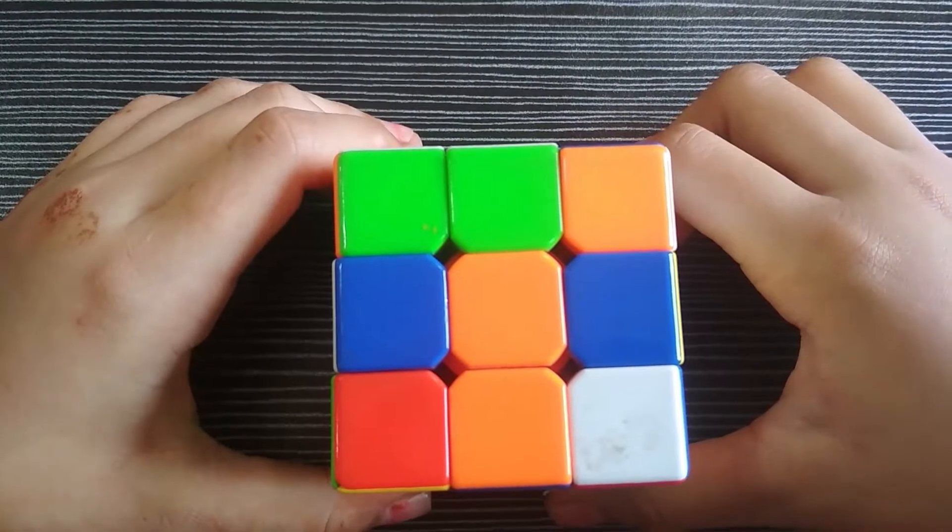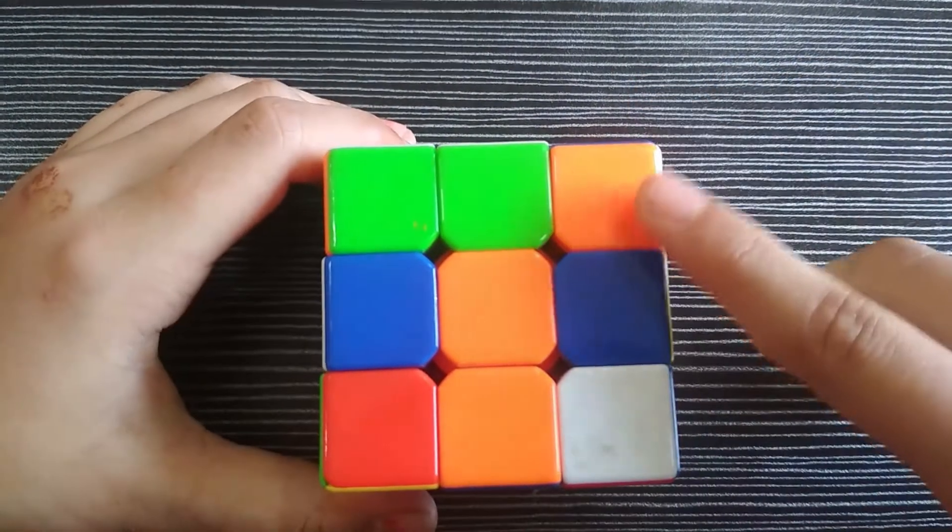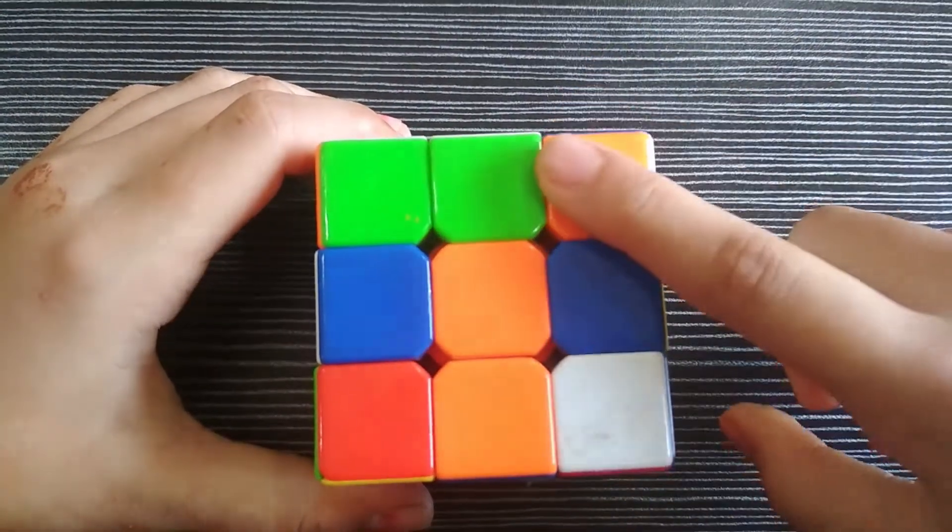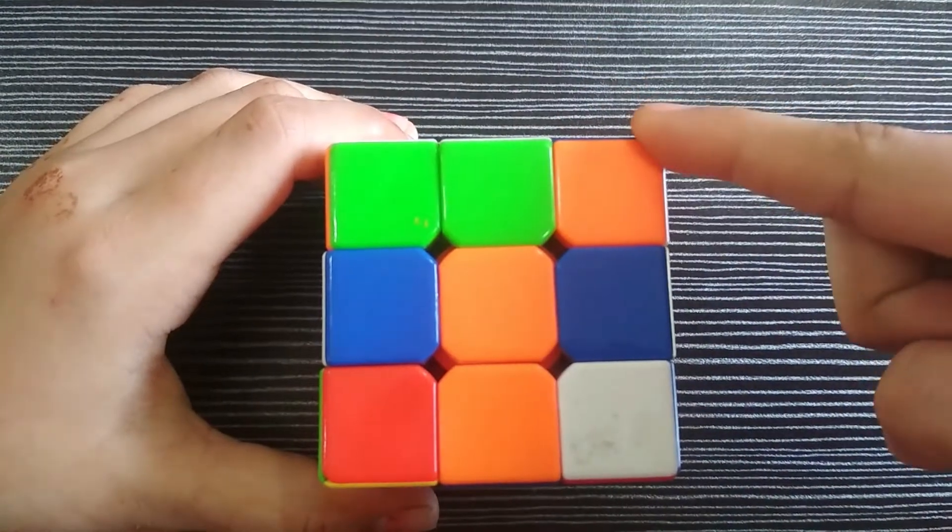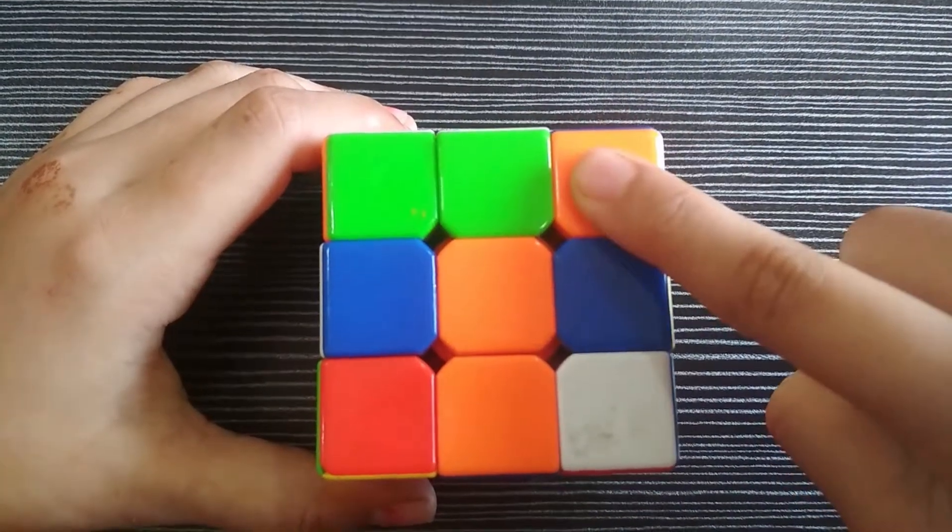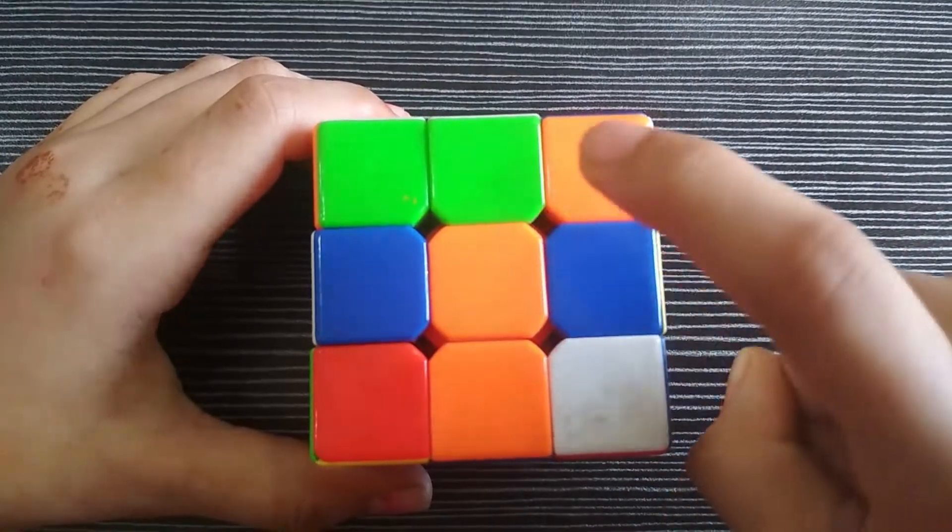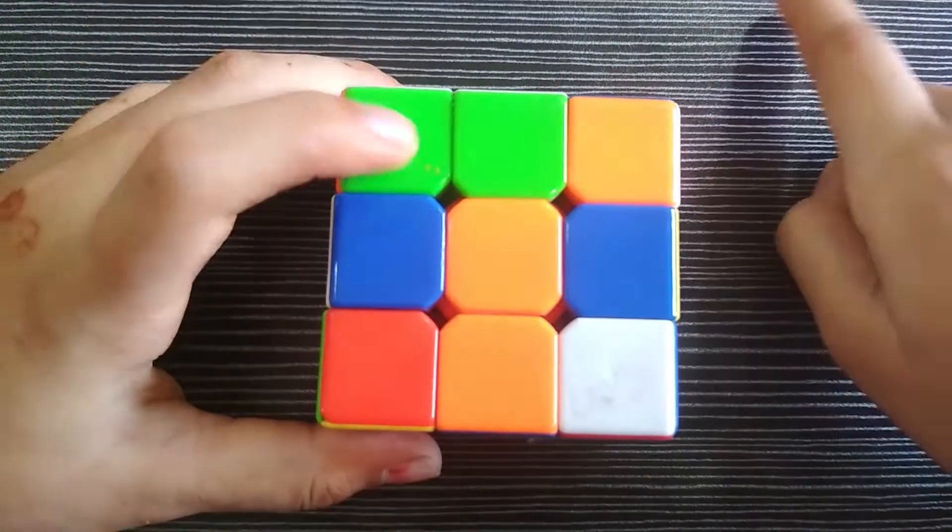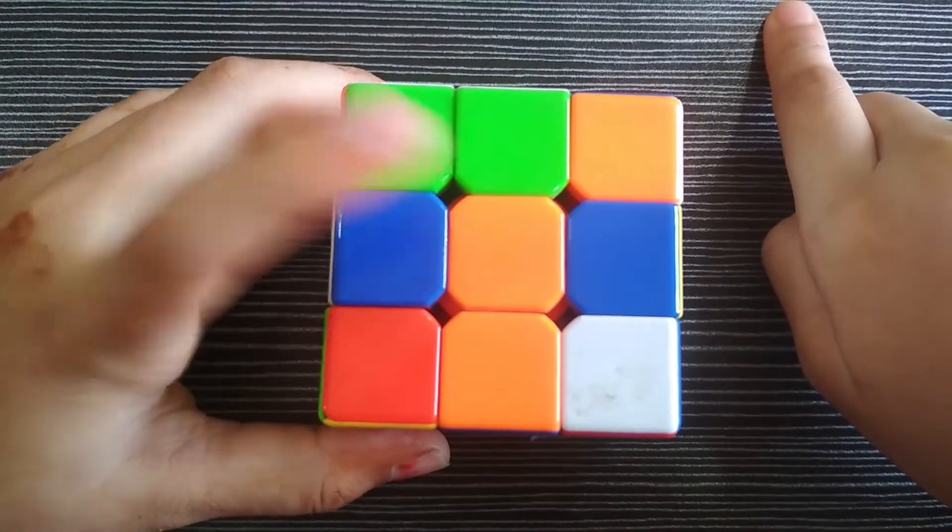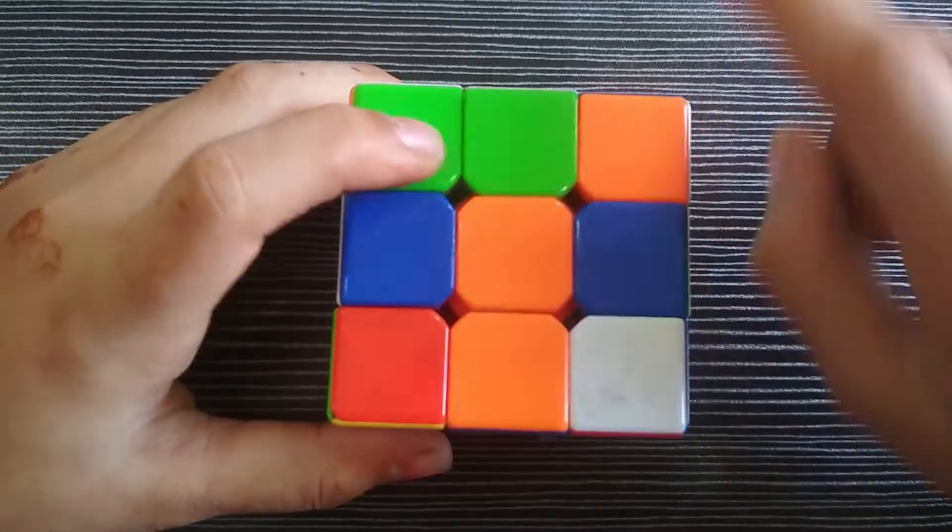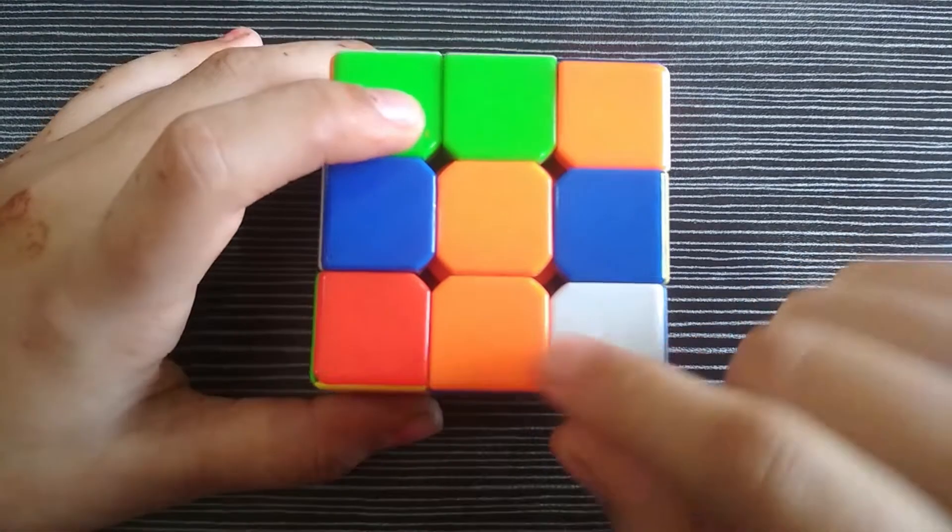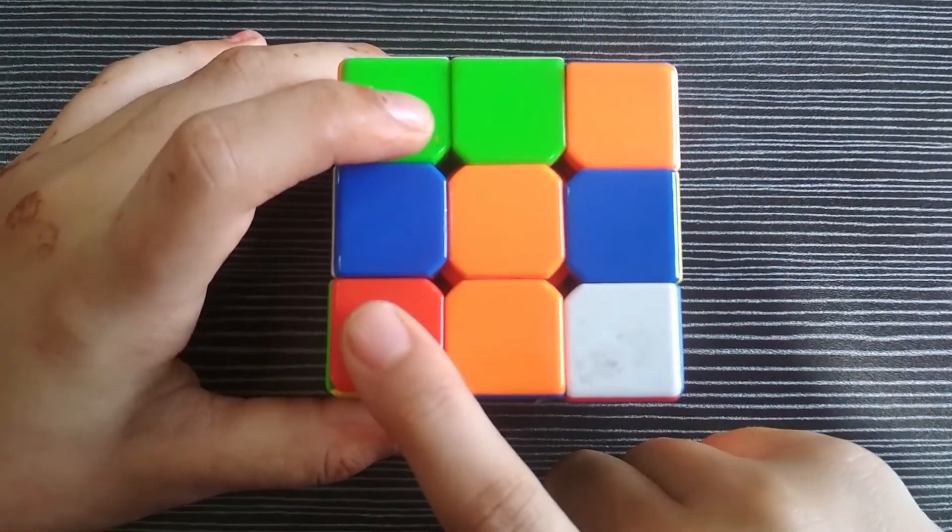Now we are going to see the corners. As you know, the corners are the end and the tip point. This orange one is the corner. It doesn't join the middle one, so it is a corner. Does this green one join? No, so it is a corner. This white one is also a corner, and this red one is also a corner.